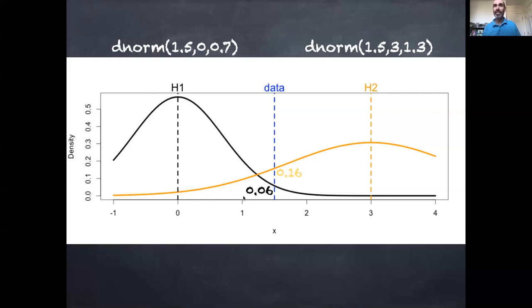Not only can we say that this one is more likely than the other, we can actually say how much more likely. So in fact, because this is 0.16 and this is 0.06, the ratio of those is 2.7. So we can actually say it is 2.7 times more likely that this data point is compatible with hypothesis two than hypothesis one.